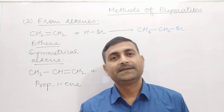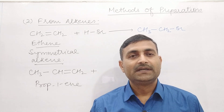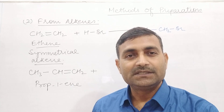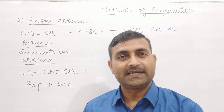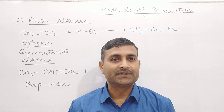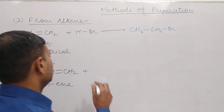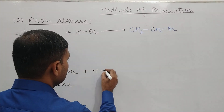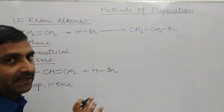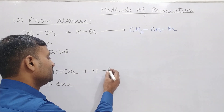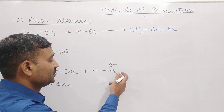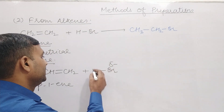We can be given HI, HBr, or HCl, but most importantly when we apply Markovnikov's addition, HBr is generally given. So here we use HBr. In this case, Br is more electronegative than hydrogen, so the shared pair of electrons goes to Br and it acquires partial negative charge, while hydrogen acquires partial positive charge.